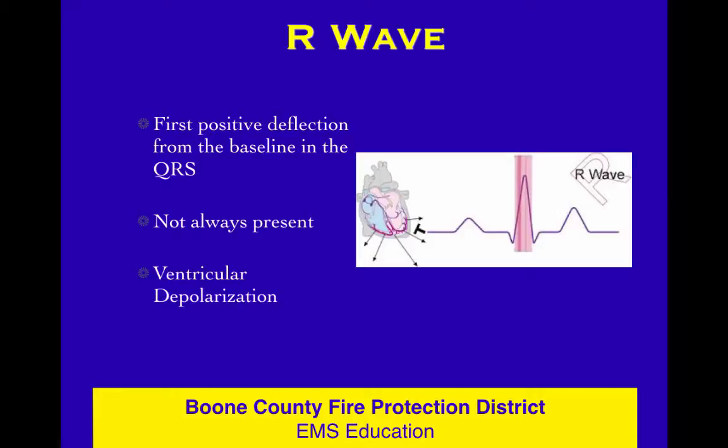The R wave is the first positive deflection off the baseline in the QRS — again, not always present. Depending on what leads you're looking at, what view of the electrical activity you have, you may see different shapes. The R wave is not always there; sometimes it's just an S wave or just a QS wave.